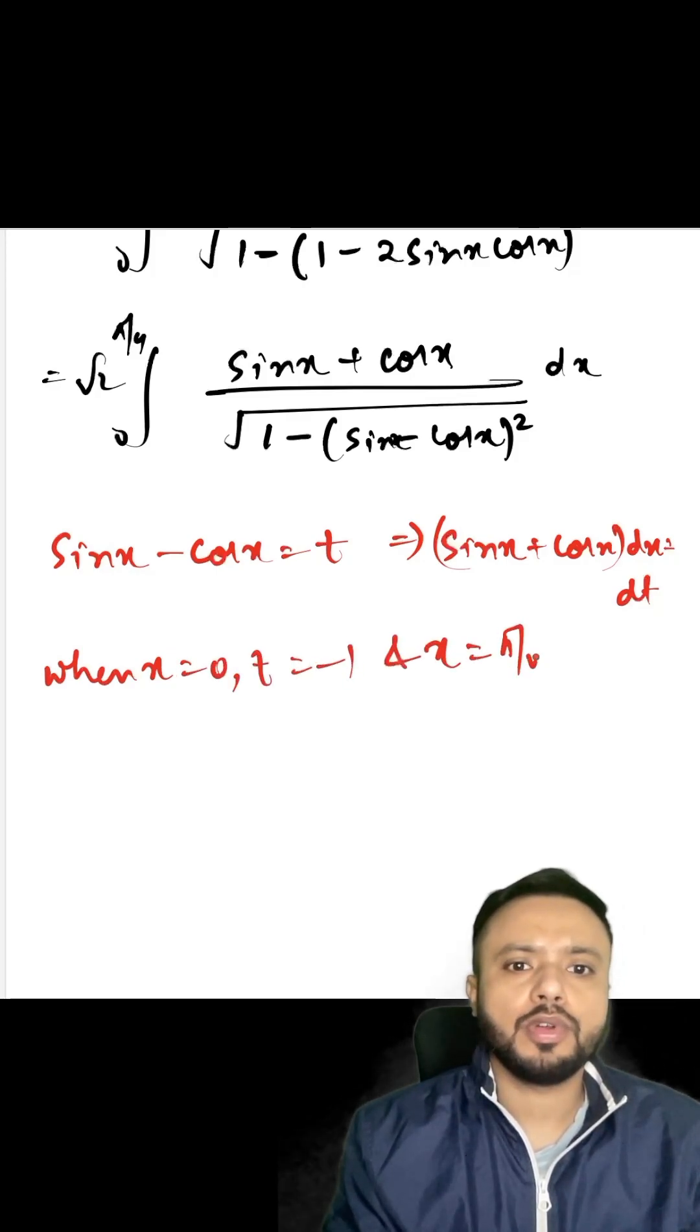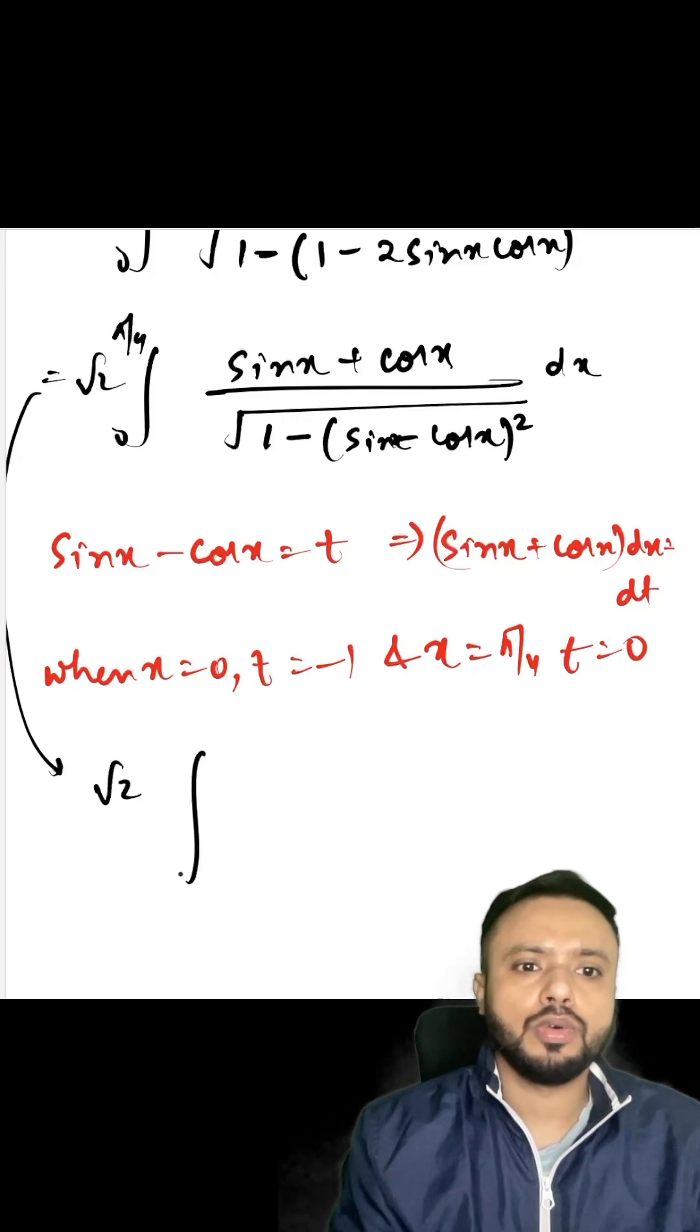So I will write this integral in terms of t as root 2, so new limits would be from minus 1 to 0, dt upon root of 1 minus t square. So it would be root 2 sine inverse t from minus 1 to 0.